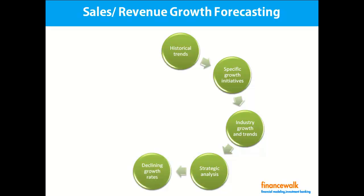It is not uncommon to have declining growth rates — there is growth, but at a slower pace in the projection period, as a company cannot grow at 15% or 20% forever. You cannot keep a 15–20% growth rate forever. As the base increases, the growth rate decreases. For example, you cannot grow by 20% when the base is 10 lakhs the same way as when it's 10 crores. The growth percentage may decline gradually — from 15% to 14%, 13.5%, then 12%.